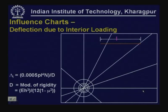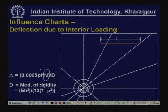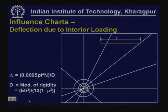We have a similar influence chart for computing deflection in the interior loading. Here also we place the tire imprints on the diagram to the same scale, count the number of blocks N, and then using contact pressure, radius of relative stiffness, and modulus of rigidity D — computed as E·h³/[12·(1−μ²)] — we can compute the deflection. So using these influence charts we can compute stresses or deflections in different locations for multiple wheel loads and also for wheel loads of different contact areas.